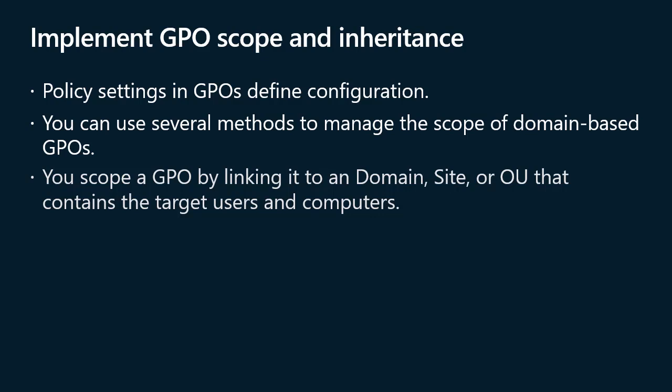The first method is the GPO link. In ADDS, you can link GPOs to sites, domains, and OUs. The site, domain, or OU then becomes the maximum scope of the GPO. The configurations will affect all computers and users within the site, domain, or OU, including those in child OUs. You can link a GPO to more than one domain, OU, or site. However, linking GPOs to multiple sites in a multiple-domain forest can introduce performance issues and should be avoided.